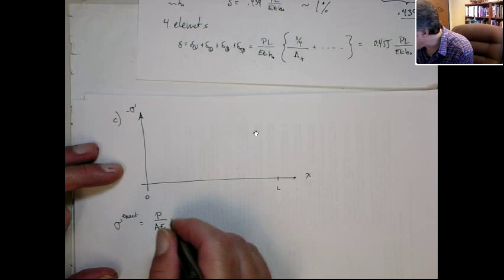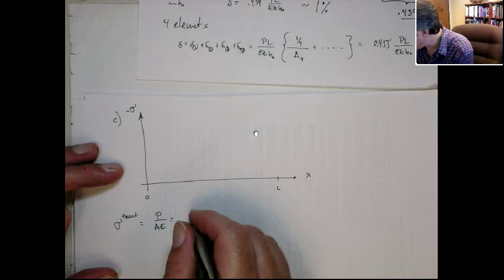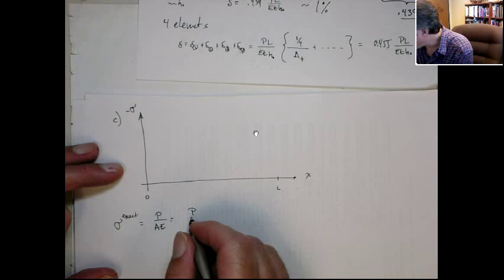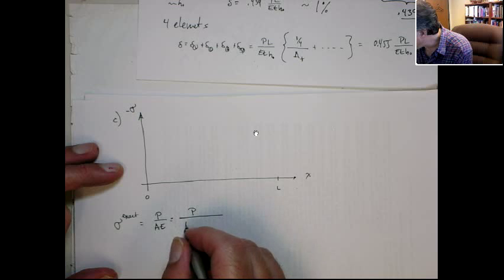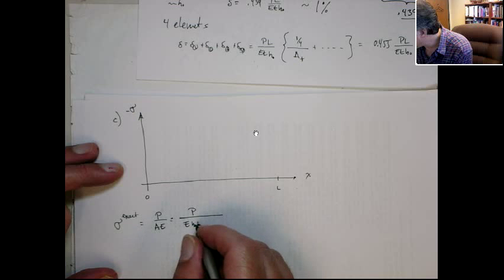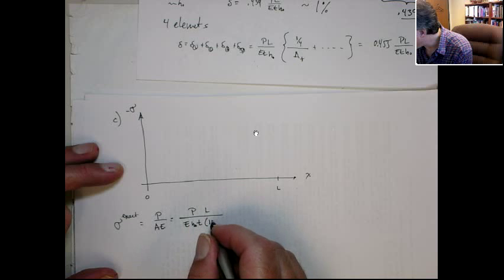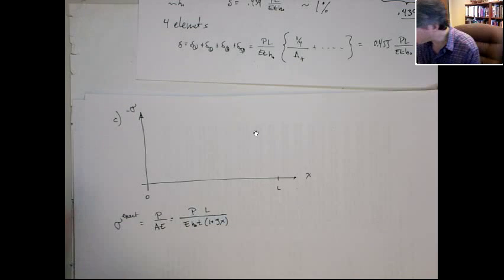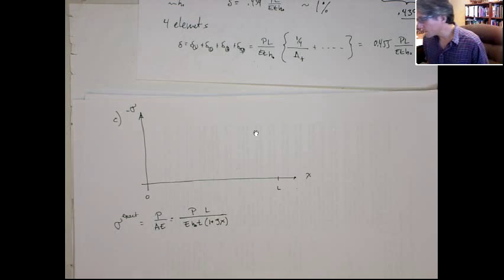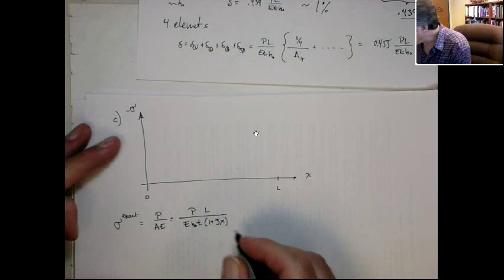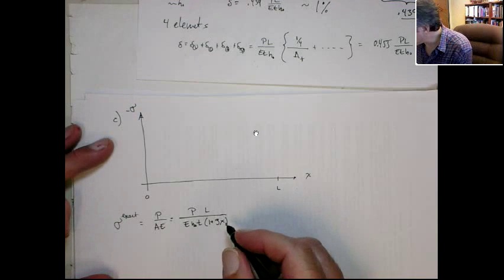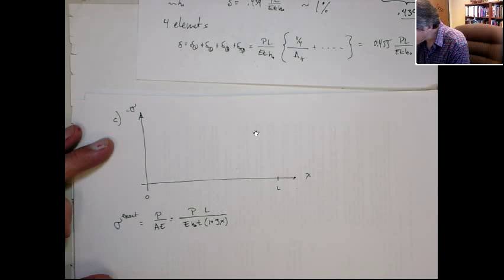Let me get rid of this spreadsheet. Okay, for the exact case, we already figured that out to be P over AE, right? We know that the area is a function of X, so this gives me P over E, H naught, T, and let's do the L, so there's the L up there, 1 plus 3X.